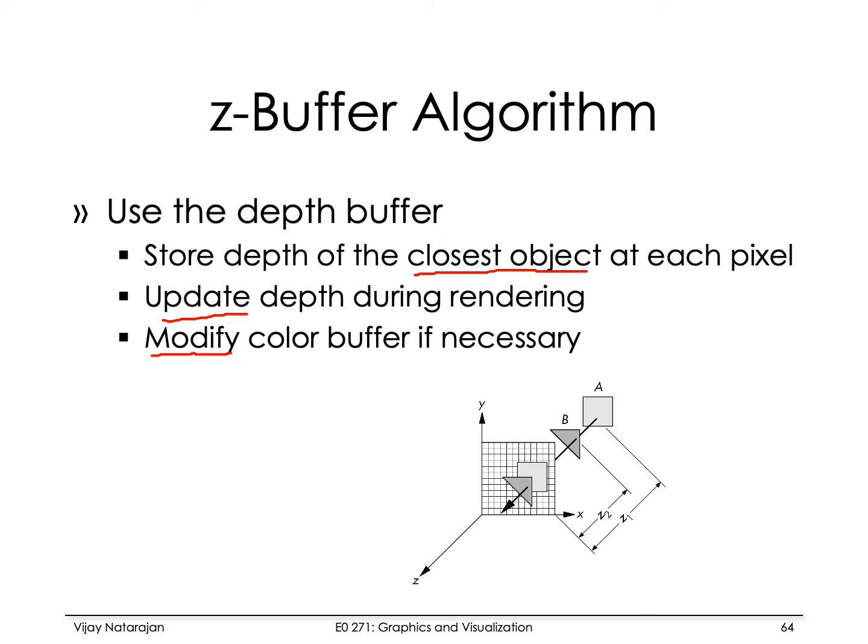The z-buffer algorithm modifies rasterization so that the depth buffer and frame buffer are updated only if the current fragment is the closest. In this example, B is closer than A, so all the fragments corresponding to B will be visible because they override the ones corresponding to A.